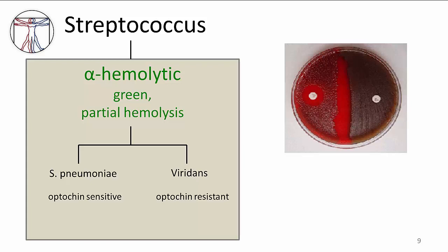The two groups can be differentiated on several other characteristics. First, we can use antibiotic susceptibility discs to differentiate them. These discs contain the antibiotic known as optochin. Strep pneumoniae is sensitive to optochin and viridans are resistant. We can see from this picture on the left that strep pneumoniae will not grow in the presence of the antibiotic disc, whereas viridans do not seem to be bothered by it at all and growth goes all the way up to the level of the disc.